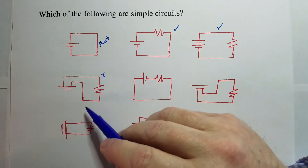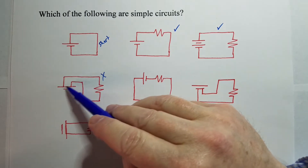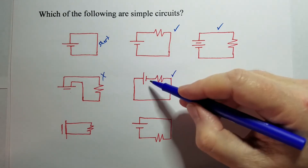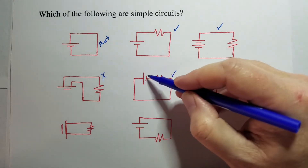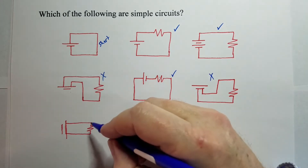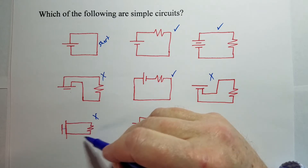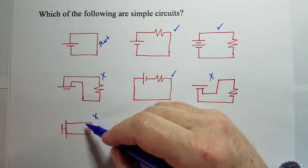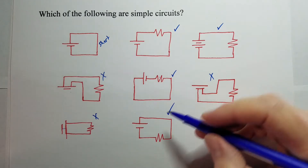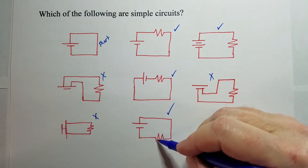This one is not a simple circuit — see how both lines connect to the positive side of the battery, so there's no potential difference and no current will flow. This one, yes, that's a simple circuit: one battery, one loop from one side of the battery to the other, with one resistor. This one and that one are not simple circuits either — again, both wires are connected to the same post on the battery, so no current will flow because there's no potential difference. This one, yes, that's a good simple circuit. It doesn't matter where the resistor is, just as long as you have one loop from one side of the battery to the other and the resistor is somewhere in that loop.